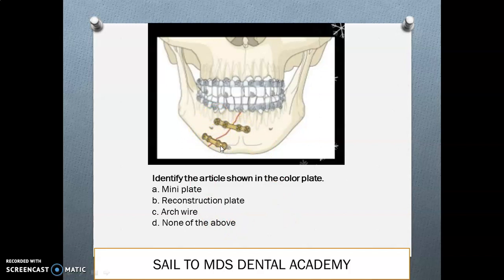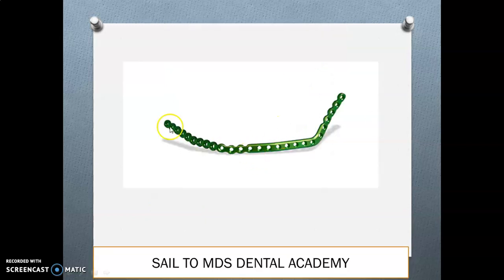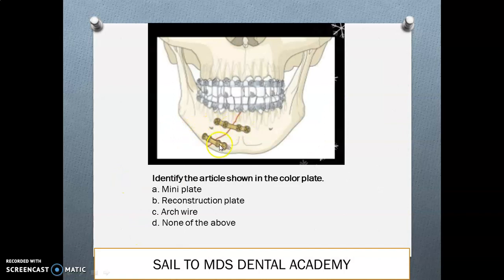Identify the article shown in the color plate: it is a mini plate, also known as Champy's plate. Key facts about mini plates: thickness is around 1.5 to 2.0 mm; mini plates always come in pairs; mini plates are monocortical — but on the inferior border of the mandible they are bicortical. You should also differentiate between the mini plate, arch wire, and reconstruction plate.